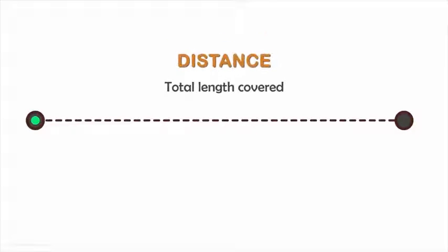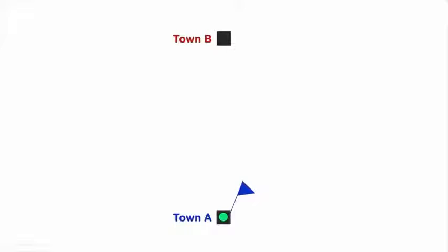When we move from one place to another, the measure of total length we cover is called the distance. So you have to travel to this town and the best route is straight up north.